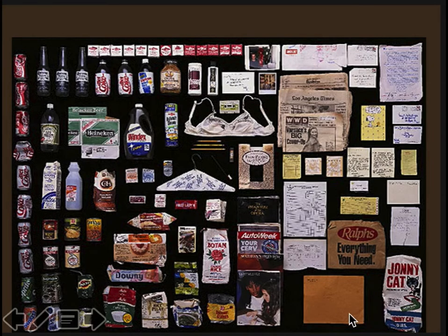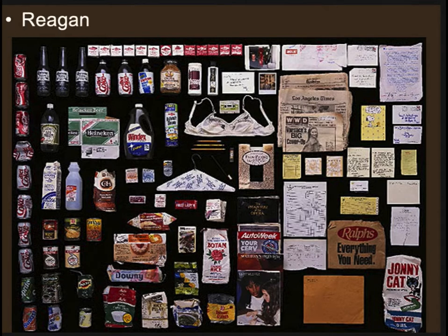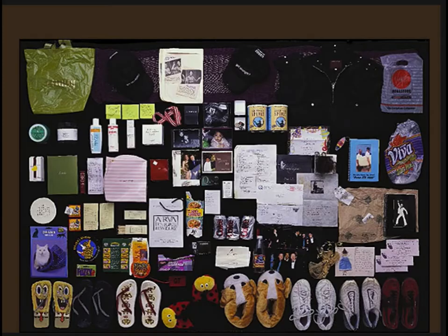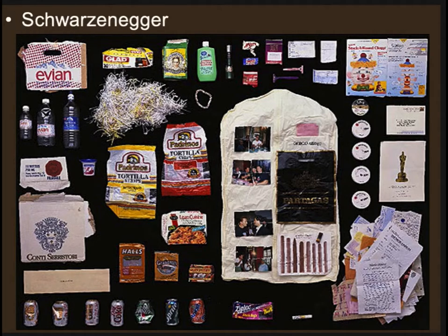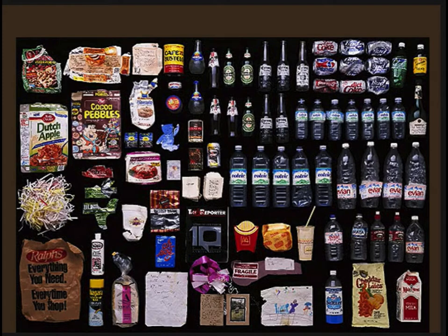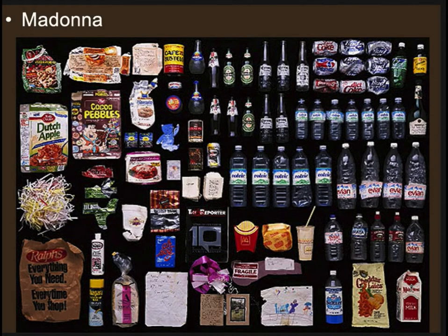Let's see if you can figure it out. The one with the bra and Johnny Cat — it's actually Ronald Reagan, believe it or not. The one with all that footwear turns out to be Halle Berry. Who's the big reader in the group? A lot of people would guess Schwarzenegger, but it's actually Spielberg. The one with lots of bottled water is Arnold Schwarzenegger. Madonna had the Cafe Bustelo. And then finally, the only one left: Nicolas Cage. You could learn about the individual from their garbage, and if you're looking at many different households, you could learn about the society.